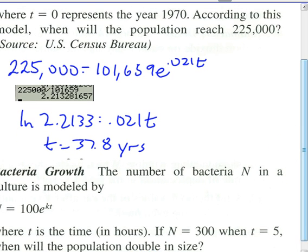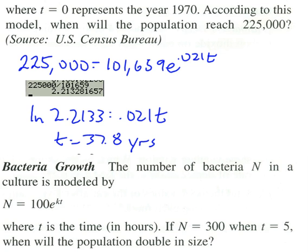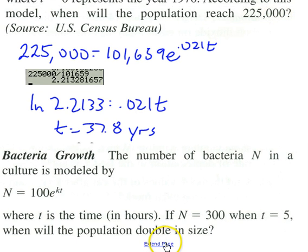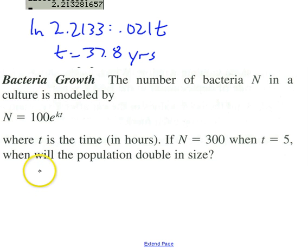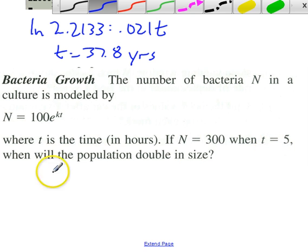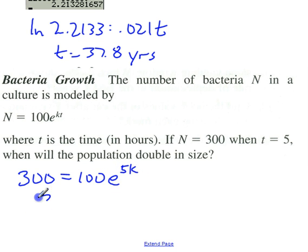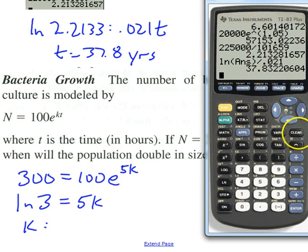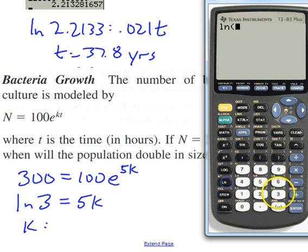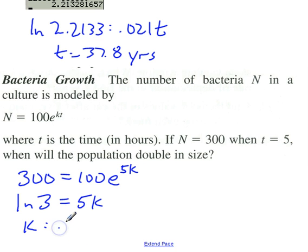The number of bacteria in a culture is modeled by N equals 100 e to the kt. We don't know k, but we know that when t equals 5, N equals 300. So 300 equals 100 e to the 5k. That means the natural log of 3 equals 5k, so k equals the natural log of 3 divided by 5, and we get 0.2197.